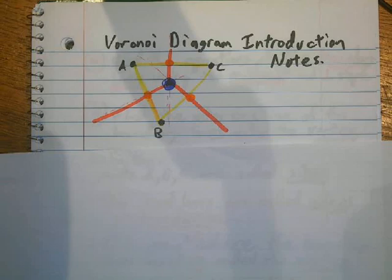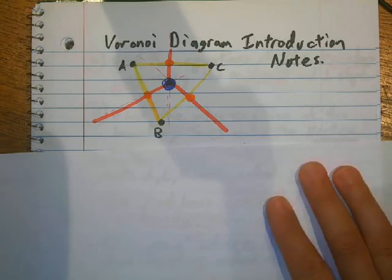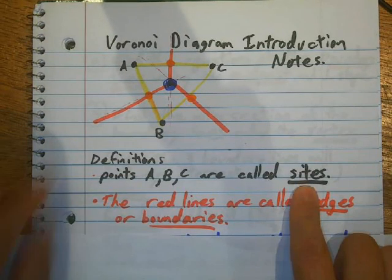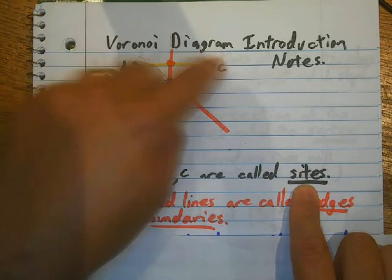All right, I'm going to talk about Voronoi diagrams. Okay, so when you've got a Voronoi diagram, you've got points here that are called sites. So points A, B, and C are sites.